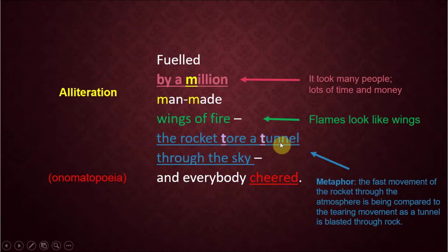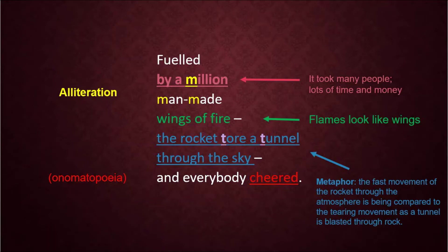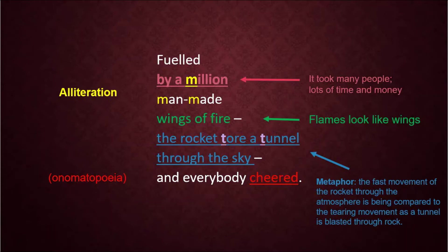We've also got a metaphor here: the rocket 'tore a tunnel through the sky.' Obviously the rocket didn't literally tear a tunnel through the sky, but it went straight up into the atmosphere — like tearing a tunnel through rock. If you need to build a road through a mountain, you have to blast that rock away — it's a violent action. So this rocket is very loud, going very fast, almost as if it's tearing a metaphorical tunnel through the sky. And because of that, everybody cheered — so delighted that this rocket had finally taken off and gone into space. The word 'cheered' represents a sound, so we call that onomatopoeia.